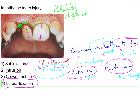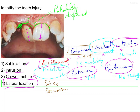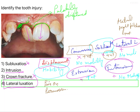Another important feature is pain on percussion. In concussion, pain on percussion is present. In subluxation, yes it is present. In lateral luxation, pain on percussion is present, but importantly there will be a high-pitched metallic sound simulating an ankylotic tooth — so it would look like an ankylotic tooth with a high-pitched metallic sound on percussion.